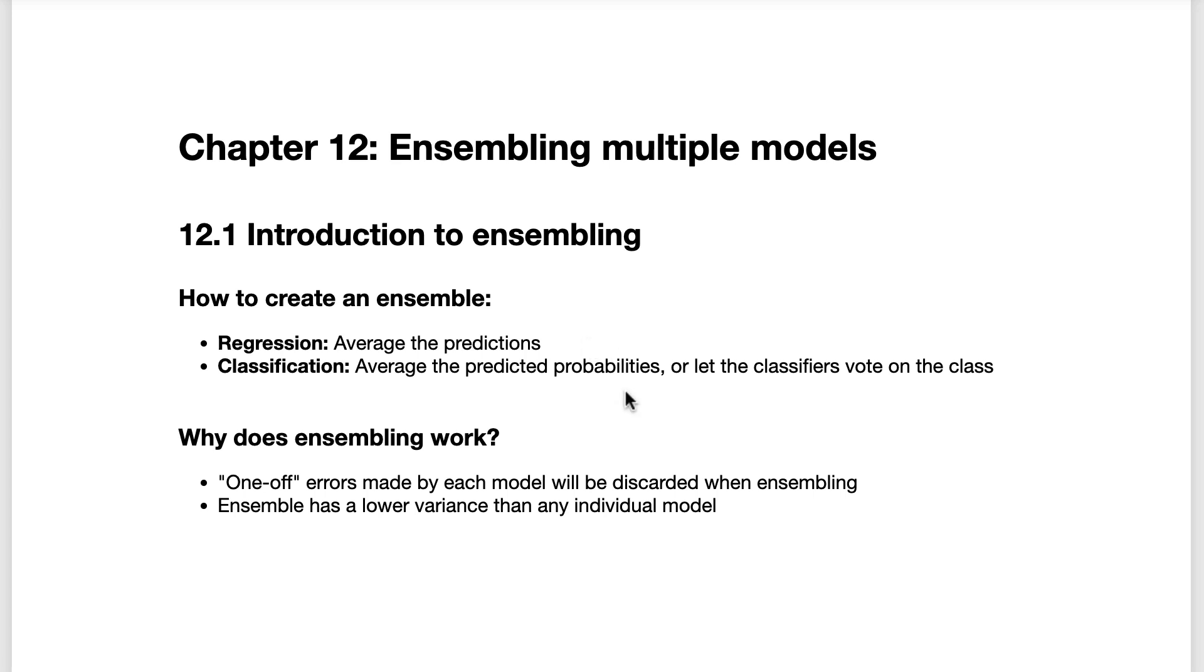For a classification problem, you can either average the predicted probabilities output by the classifiers, or you can let the classifiers vote on which class to predict. We'll see examples of this below.